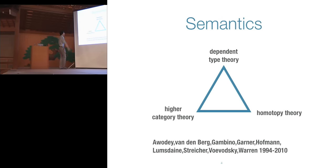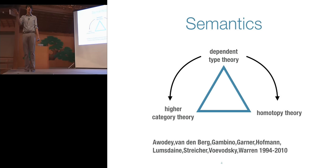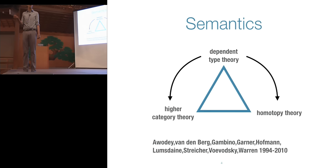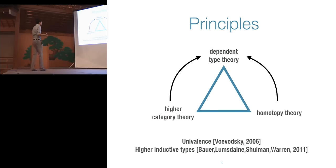This homotopy type theory project began with some surprising semantics: taking dependent type theory — where you have dependent functions and types that depend on values — and interpreting it in mathematical settings. This was first noticed around 1994 by Hofmann and Streicher, and over the next 15 years people elaborated and generalized this correspondence to cover higher category theory and homotopy theory. Eventually very smart people realized that these semantics suggested new things we could add to type theory.